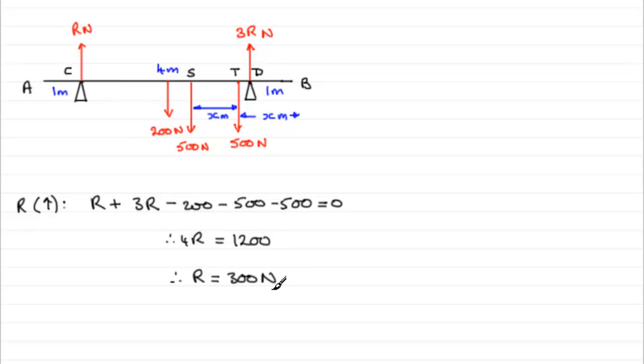So now that I've got what r is, I can now think about taking moments. To take moments, I can take moments about any point that I like. But I feel that the best place to take moments in this problem would be about the point B. Why? Because if I take it about B, I'll get x coming directly into the equation. So we'll come down here and we'll take moments about B.